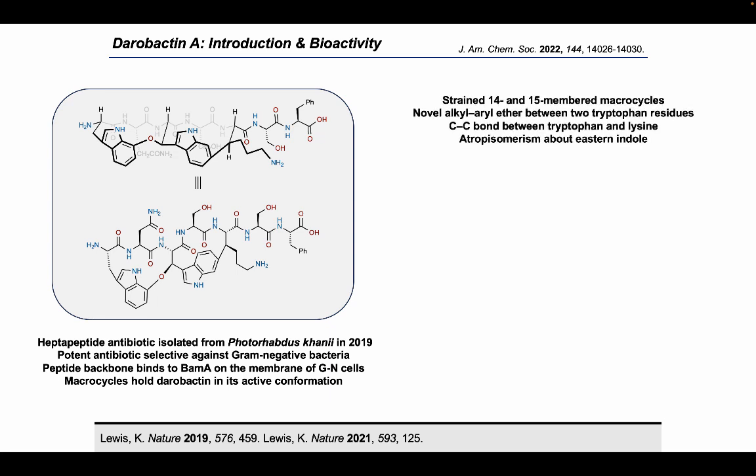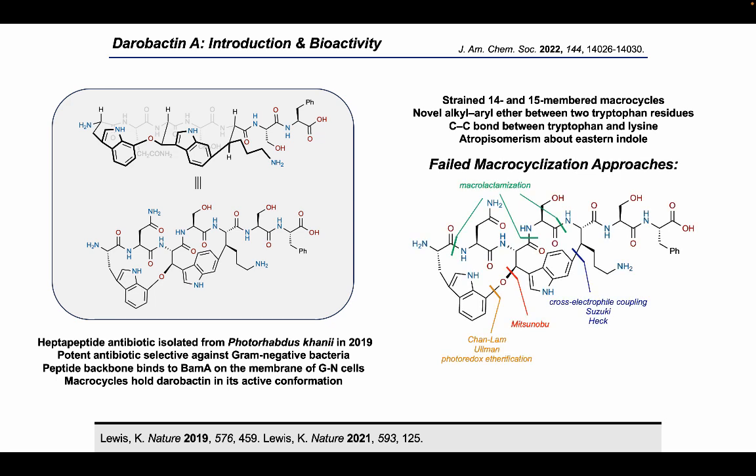The indole-containing macrocycles hold the peptide backbone in a beta-sheet conformation that facilitates this binding. In addition to its impressive biological activity, Darabactin A has a complex chemical structure. Two strained macrocycles, a novel alkyl-aryl ether, and a tryptophan-lysine carbon-carbon bond are each considerable hurdles for total synthesis. Additionally, due to hindered rotation about the indole, the eastern macrocycle exhibits atropisomerism.